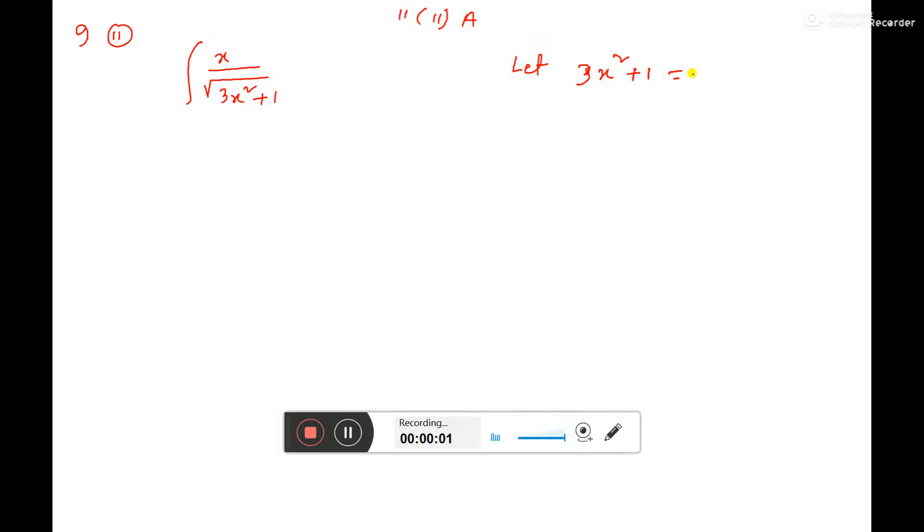If you consider that equal to z square, then the sum will be easy. If you do the differentiation, then it will be 3 to the 6x dx equal to 2z dz.